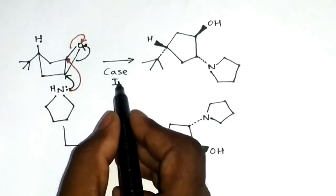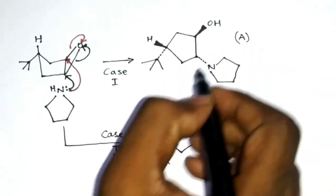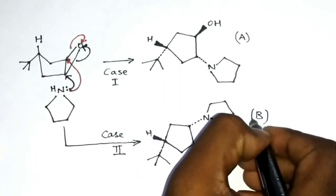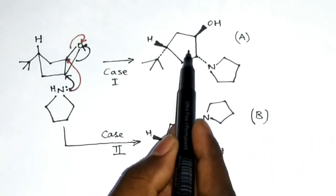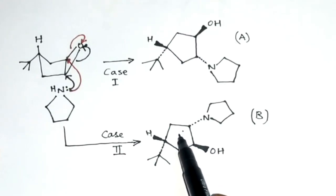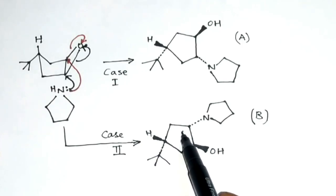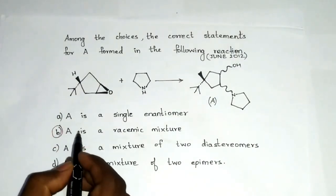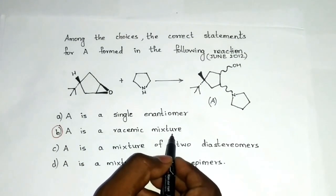The product in case 1 can be written as A, and the product in case 2 can be written as B. If you compare both of these, you can observe that they are the mirror images of each other. Since they are mirror images of each other, it is a racemic mixture. So option B, which states that it is a racemic mixture, is the right option.